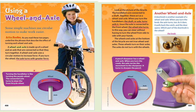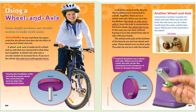Look at the picture of the bicycle. The handlebars are connected to a shaft. Together, these act as a wheel and axle. When you turn the handlebars, the shaft, or axle, turns with it. Since the axle is connected to the front wheel, the wheel also turns. In this way, you can steer without having to turn the wheel from side to side with your hands. The wheels and axles at the bottom of the bicycle are not true wheel and axles — these wheels turn on their axles; the axles do not turn with the wheels. Another example of a wheel and axle: when you turn the knob, the axle turns too. As it does, it pulls back the catch, and the door opens. A pencil sharpener has a wheel and axle. When you turn the crank, the axle carries the movement to the sharpener. It turns to sharpen the pencil.